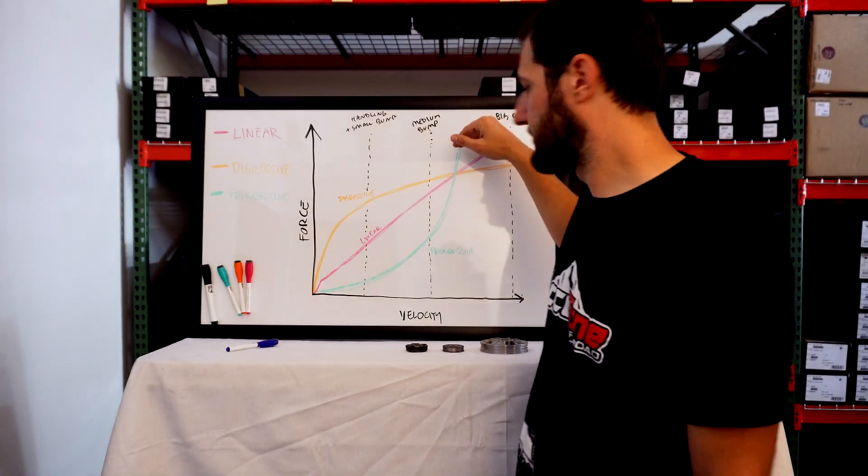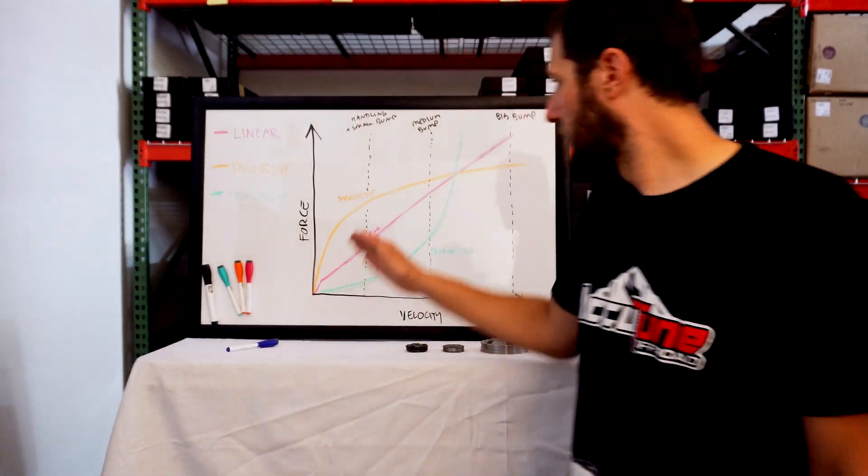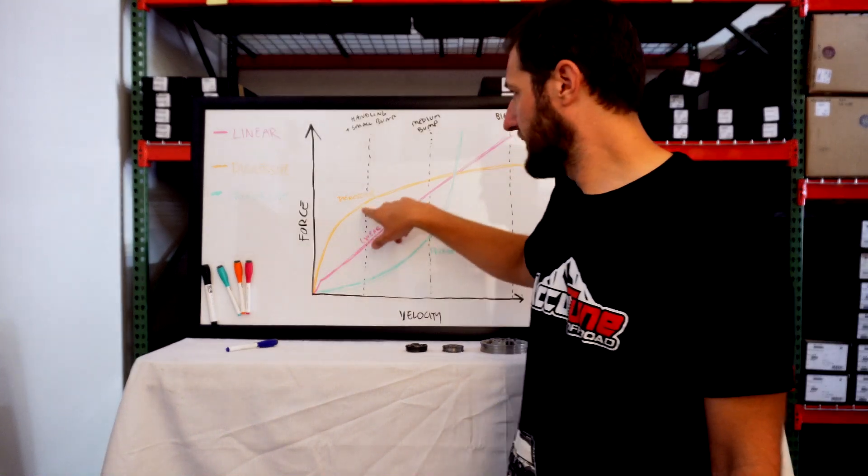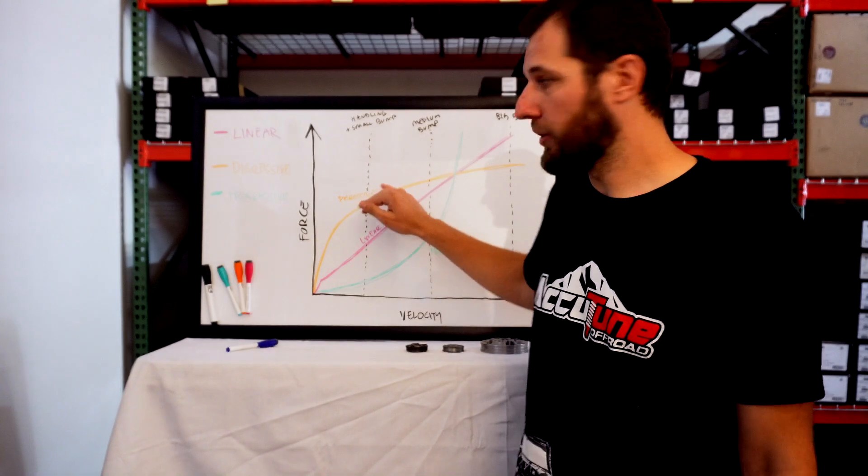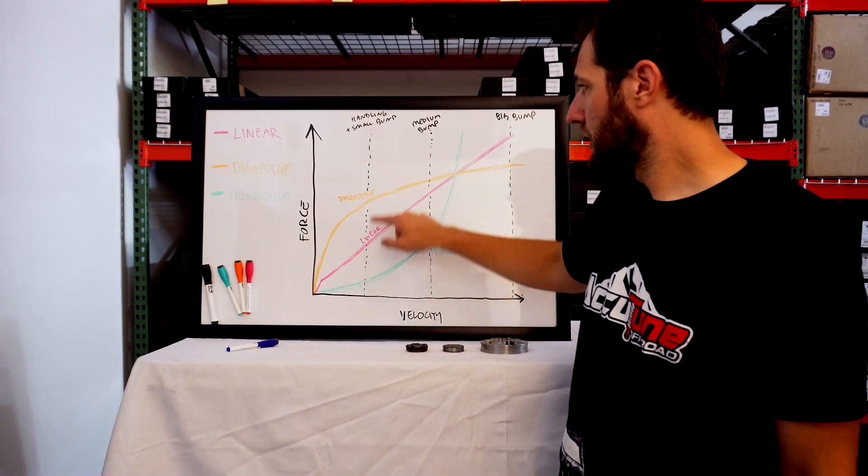Let's walk through what the benefits of each one of these are. Right here we can see a digressive piston. If handling is one of your primary concerns, you want a digressive piston because you're getting a lot of load down here at low speed. When you go around that corner, you're going to gain a lot of control. It's going to be firm.